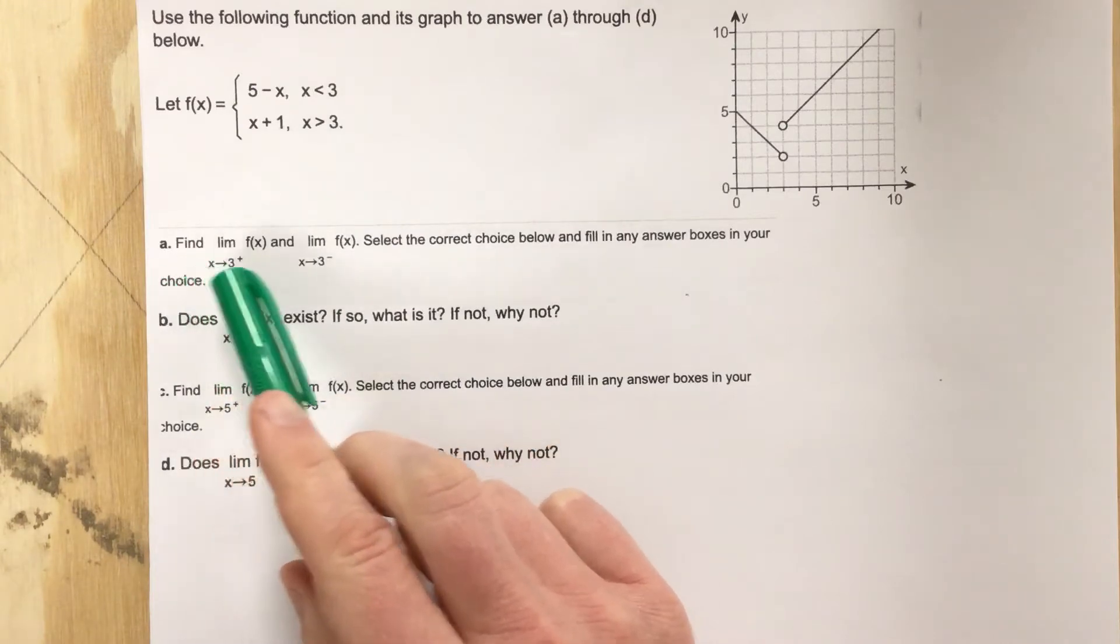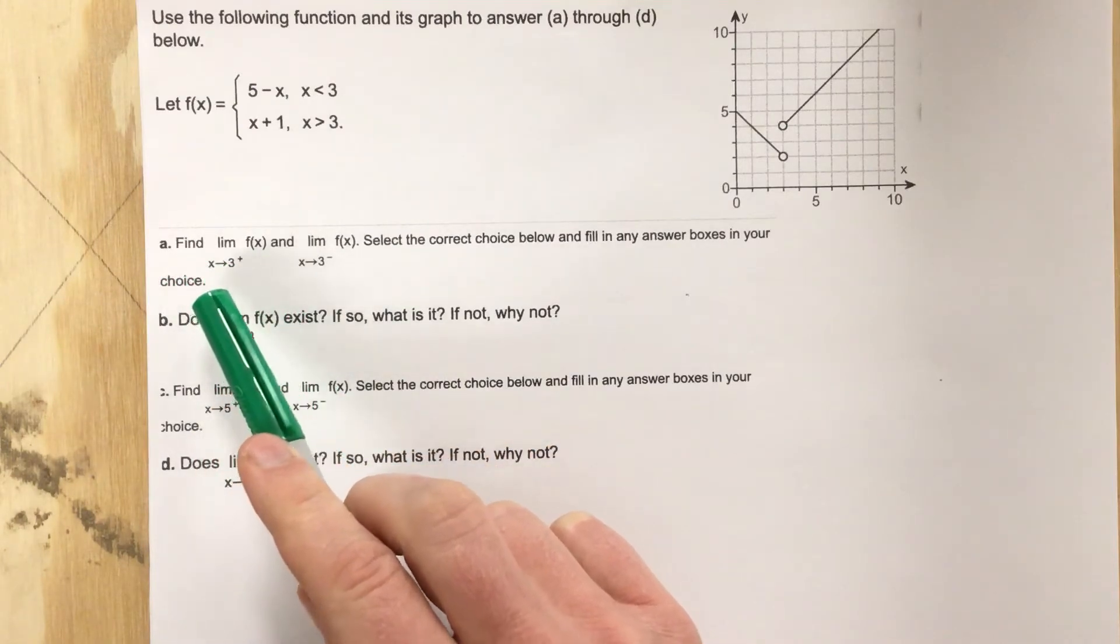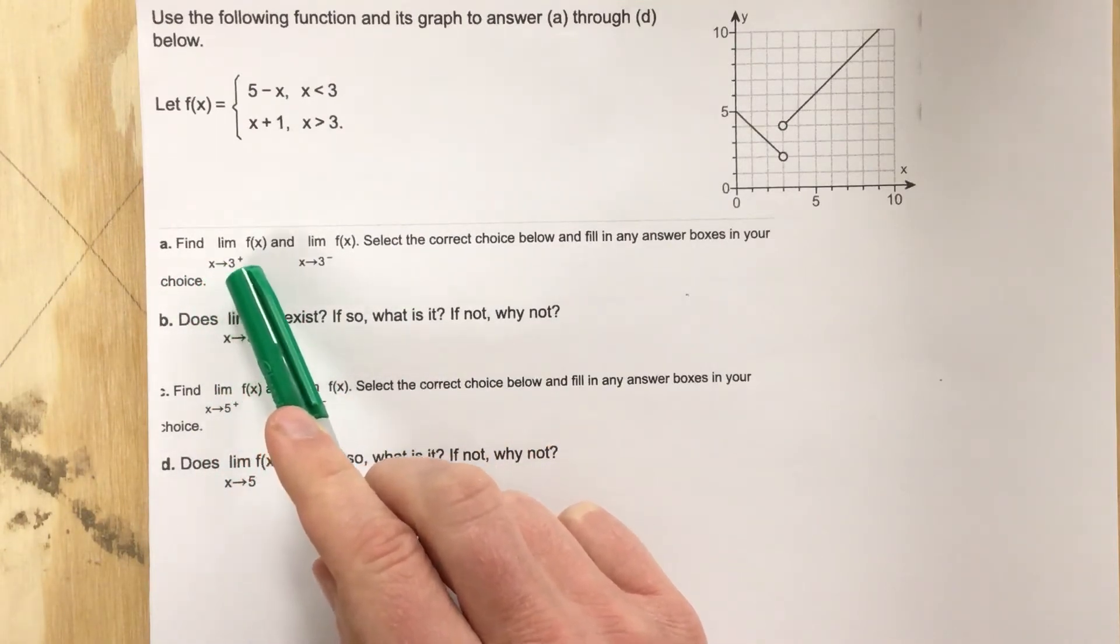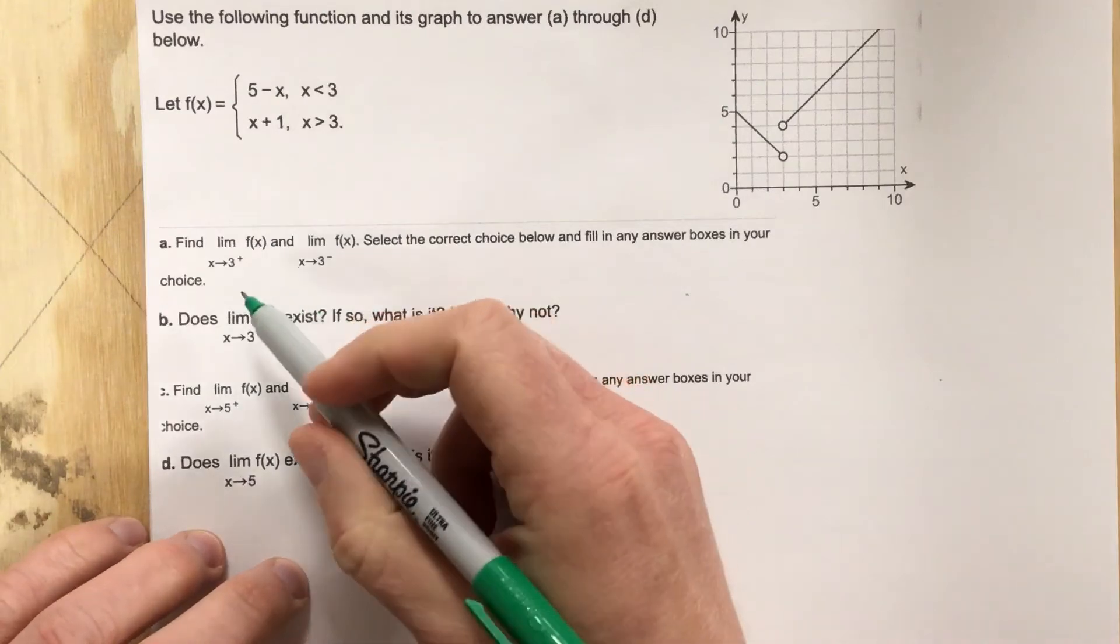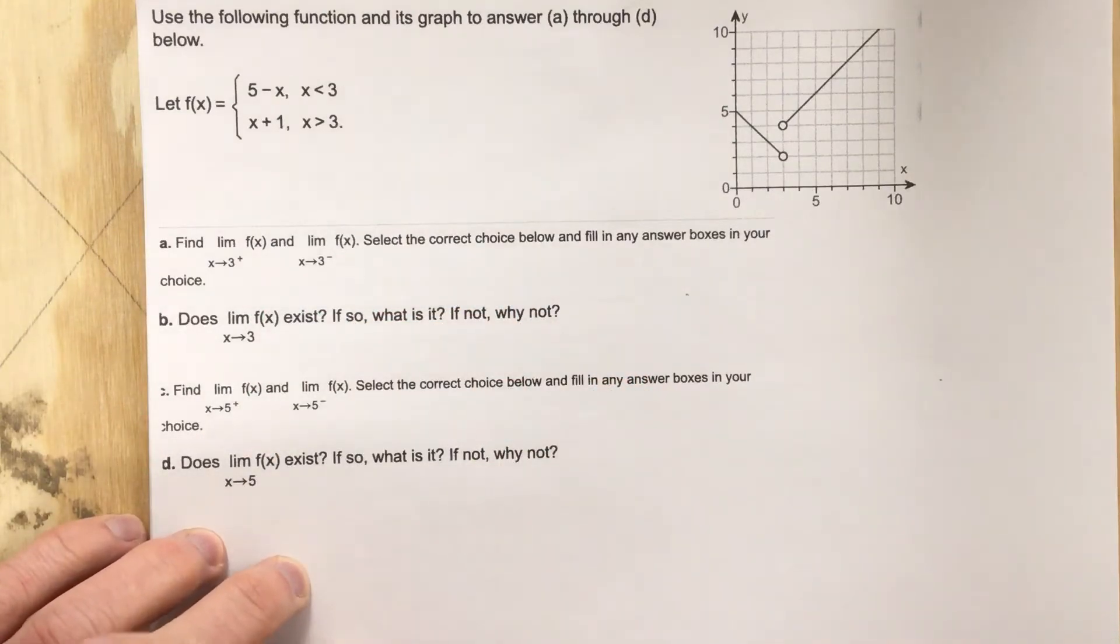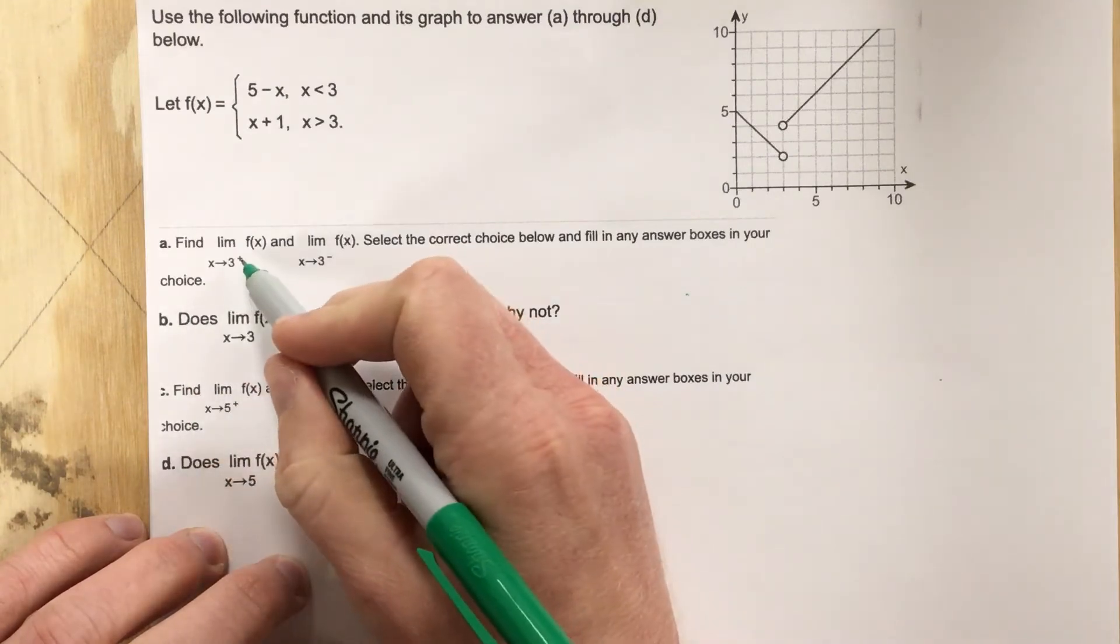In part a they say find the limit of f of x as x approaches three from the right. So you notice we're going to be doing some one-sided limits. That's what this section is all about is one-sided limits and then we're going to compare the one-sided limits to finding just the limit at a spot. And we've already talked about this in class so it should go pretty smooth.